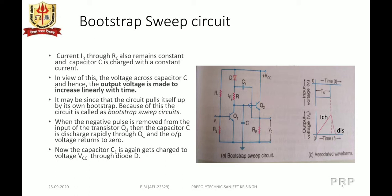When the negative pulse is removed from the input of transistor Q1, the capacitor C is discharged rapidly through Q1 and the output voltage returns to 0. The capacitor C1 is again charged to VCC through diode D. In this way, the charging and discharging of capacitor C by the large-value capacitor C1 generates the sweep circuit waveform.